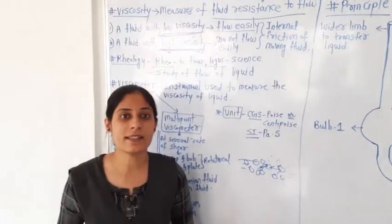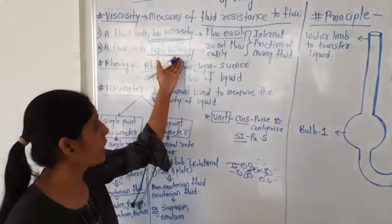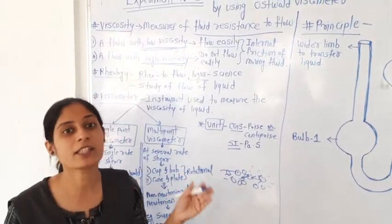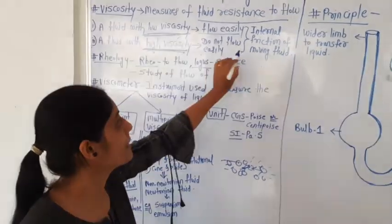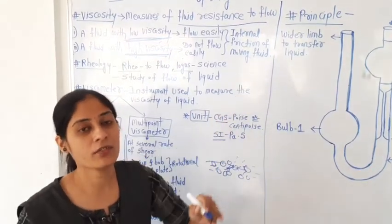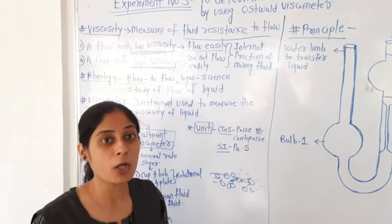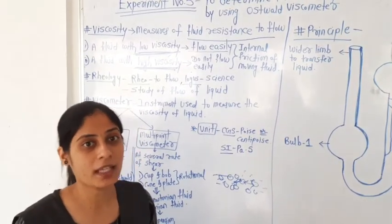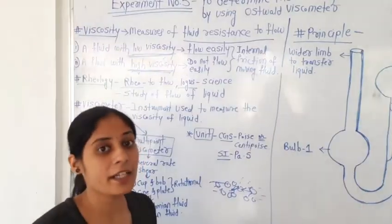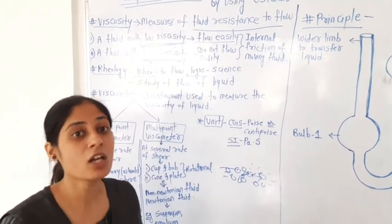Their interaction is very little. Due to the less interaction between molecules, the low viscosity sample has higher flow. In high viscous liquids, the interaction between molecules is higher and friction between molecules is higher. Due to higher friction, their flow is less. Hence, low viscosity samples have higher flow ability and high viscosity samples have low flow ability. They are inversely proportional to each other.